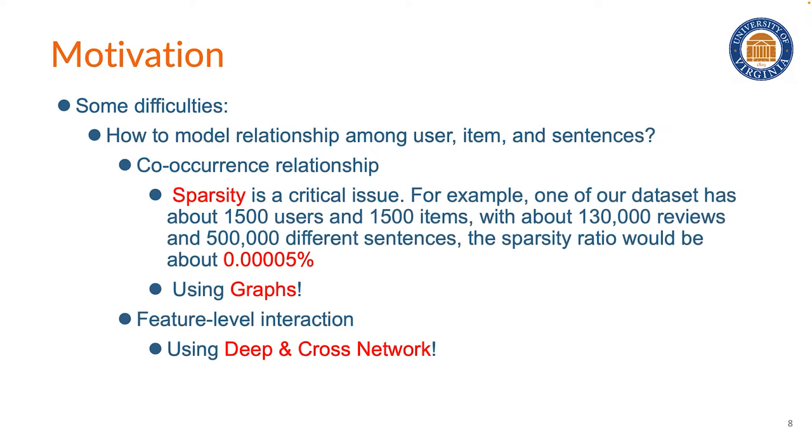Before jumping into the details of our method, I would like to first share some high-level motivations, which are actually based on some difficulties or problems we need to solve. So the first difficulty is how to model the relationship between user-item and sentences. We think that there are two ways. The first is to use the co-occurrence relationship. However, sparsity is a very big issue here, and you can see that the sparsity ratio is really small on the dataset.